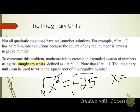Today, the imaginary unit i is going to help us be able to take the square root of a negative number. To overcome this problem, mathematicians created an expanded system of numbers using the imaginary unit i, defined as i equals the square root of negative 1. You need to know that i equals the square root of negative 1, and you also need to know that i squared equals negative 1. The imaginary unit i can be used to write the square root of any negative number — we are now able to take the square root of negative numbers, unlike we have been in the past.